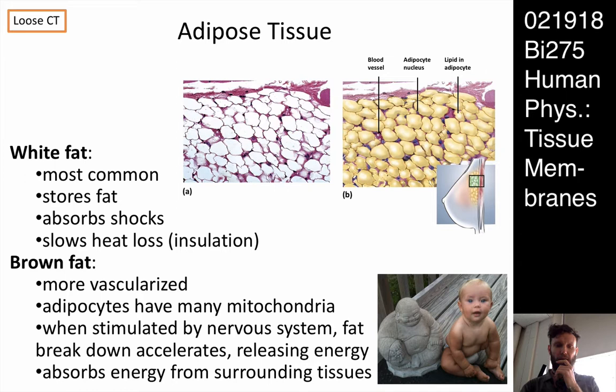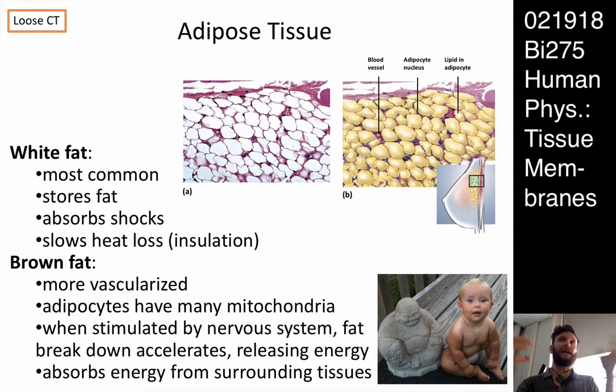So I left off talking about adipose tissue. The vast majority — first of all, adipose tissue is categorized as a loose type of connective tissue. In terms of connective tissue proper, stuff that's actually connecting things, there's going to be dense and there's going to be loose. There were three types of dense: regular, irregular, and reticular. And then there's a number of loose — there was areolar I talked about.